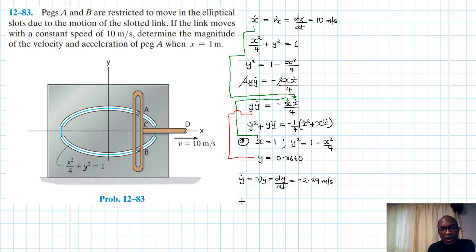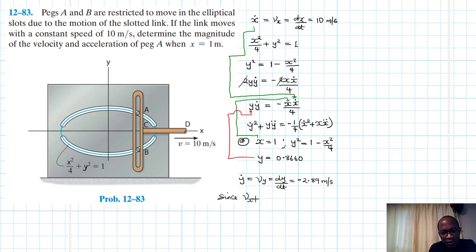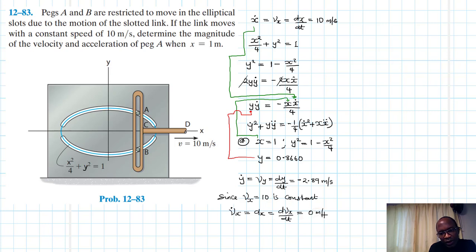We need to find the acceleration in the x and y directions. Since Vx equals 10 and is constant, the time derivative of Vx in the x direction, which equals ax, is equal to 0 meters per second squared.